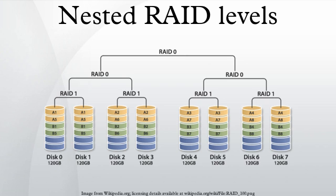RAID 1+0, sometimes called RAID 1 and 0 or RAID 10, is similar to RAID 0+1 with the exception that the RAID levels used are reversed. RAID 10 is a stripe of mirrors.